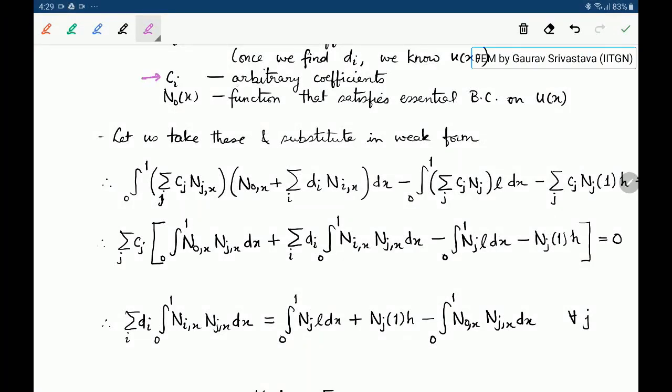Cᵢ's are arbitrary coefficients. Recall that V of X is an arbitrary function and now that we have fixed it in terms of Ns which are the known functions, the only arbitrariness will come from the coefficients C.